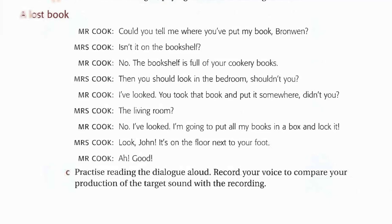3B repeat — A lost book. Could you tell me where you've put my book, Bronwyn? Isn't it on the bookshelf? No, the bookshelf is full of your cookery books. Then you should look in the bedroom, shouldn't you? I've looked. You took that book and put it somewhere, didn't you? The living room? No, I've looked. I'm going to put all my books in a box and lock it. Look, John, it's on the floor next to your foot. Good.